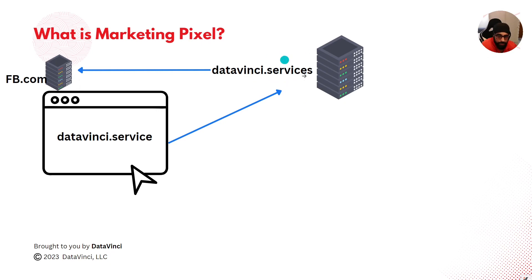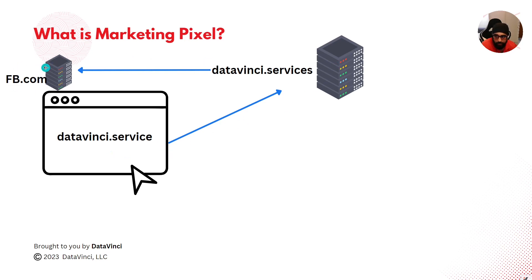Since this is happening at the server end, unless someone can hack your server, they cannot control what's happening there. On the client side, people can install VPNs, ad blockers, cookie blockers, or any kind of plugin they want. But if you send the data from the server directly to the marketing platform, no ad blocker, no VPN, no cookie blocker, and no privacy restriction on their device can stop you. This concept is nothing but server-side tagging.